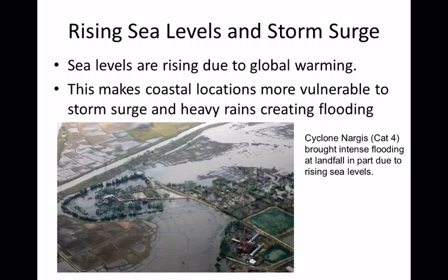This is the result of Cyclone Nargis, a Category 4 storm. A new addition in this edition of the textbook is that rising sea levels throughout the world make coastal regions more susceptible to storm surge. That wall of water can bring far more devastation than it would have under normal sea level conditions.